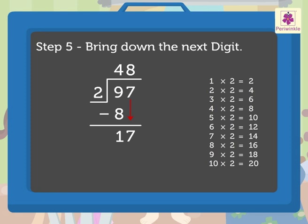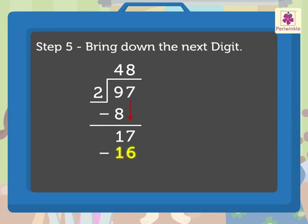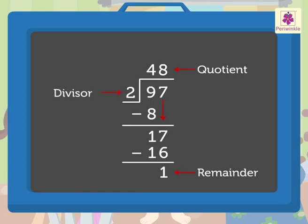As we know, 8 into 2 is equal to 16. Write the number 16 under 17. Next, subtract 16 from 17, which is equal to 1. Write 1 in the ones column. Now there are no more digits to bring down. We have finished our division.